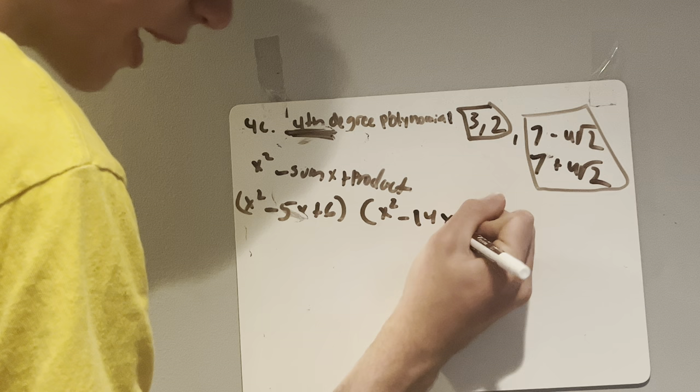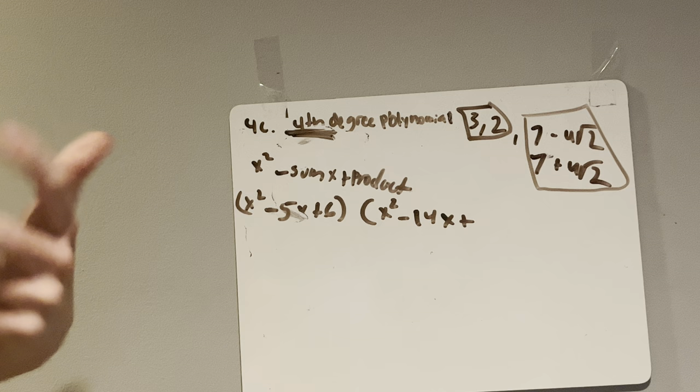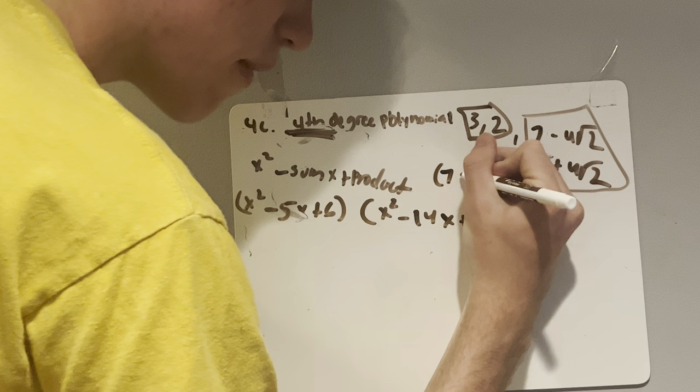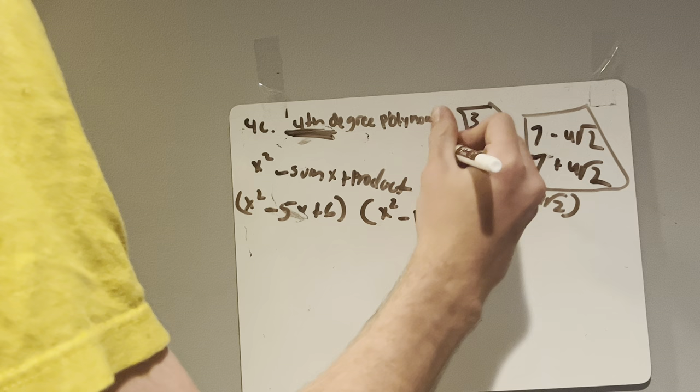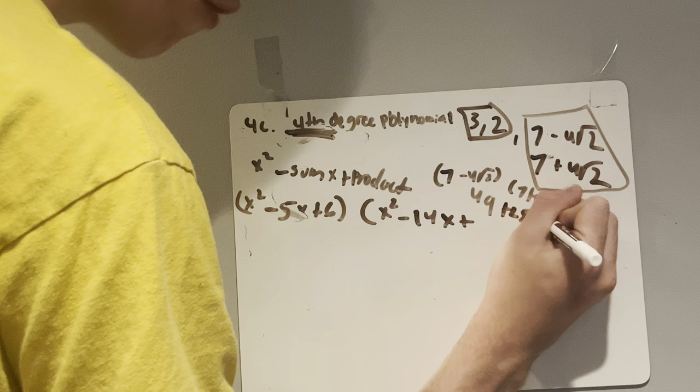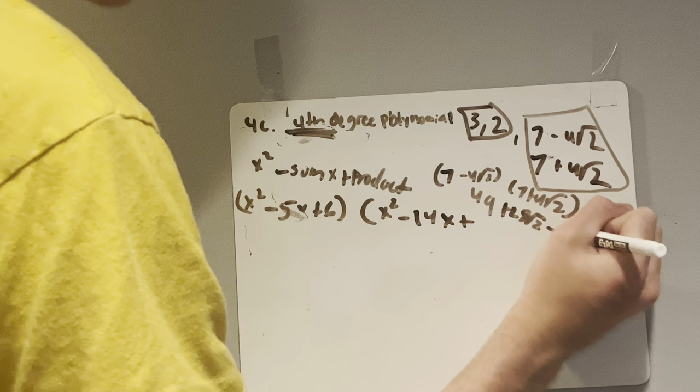Plus, now to find the product, we have to FOIL. So 7 minus 4 radical 2 and 7 plus 4 radical 2. 7 times 7 is 49. 7 times positive 4 radical 2 is 28 radical 2. Negative 4 radical 2 times 7 is negative 28 radical 2.